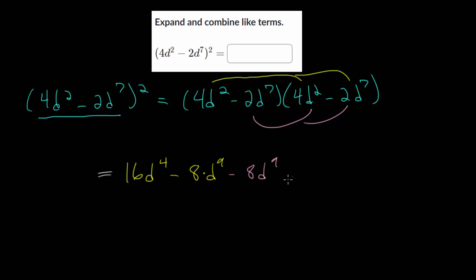Notice we got the same middle term twice. Then we take minus 2d to the seventh and multiply it by minus 2d to the seventh. Minus 2 times minus 2 is positive 4, and d to the seventh times d to the seventh — we have seven here multiplied by d another seven times, so in total that is 14 d's multiplied together, giving d to the 14th.